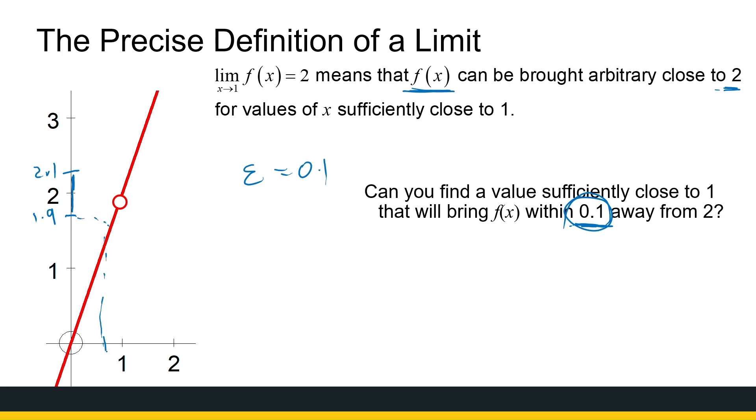The question we're asking is, firstly, can I get values of x that will get me there? Well, we can see it off the graph. There's a lot of x values I can substitute in that will land me in this band. That's what we're looking for.